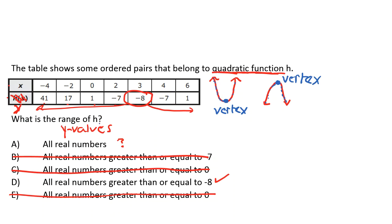If we could find where the vertex lies in our table of values — where that turning point is — we could better understand which answer choice is correct. Looking at the y-values in our table, they go down: from 41 to 7, going down; 1 to negative 7, going down; negative 7 to negative 8, going down. Then at negative 8 to 7, it goes up, and negative 7 to 1, it goes back up again. The turning point — where it switches from going down to going up — occurs at negative 8.